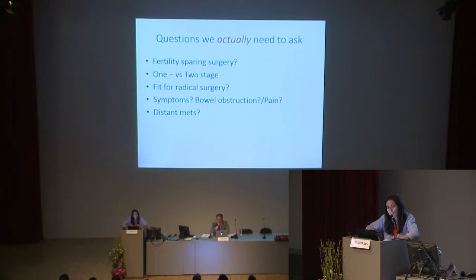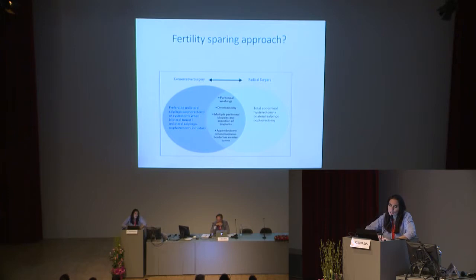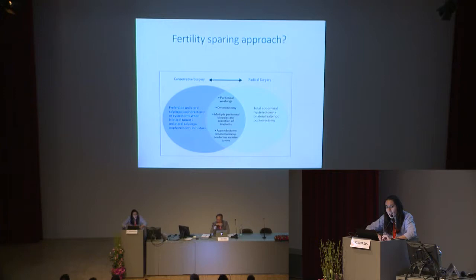These two cases show that the questions we really need to ask go beyond just operability and what we see on imaging. We need to ask: what are the patient's symptoms? What is the overall clinical picture? Does the patient want fertility-sparing surgery? Does she want a one- or two-stage procedure? Distant metastases? Going back to the German example — we just did an X-ray and liver ultrasound to exclude distant metastases and then operated. The fertility-sparing approach is increasingly relevant now with germ cell tumors and borderline tumors in younger patients.